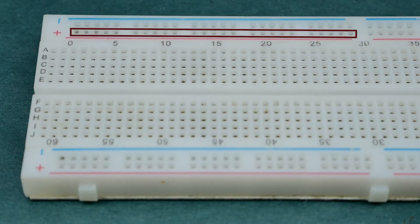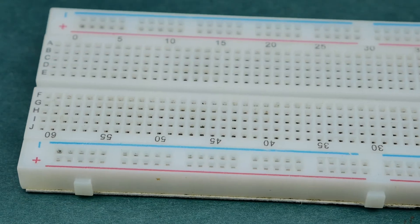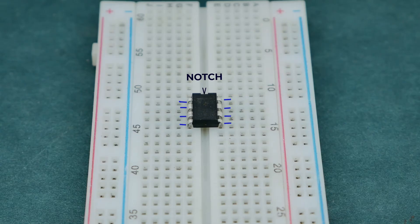We'll be using this row as positive rail and this as negative rail. Place 555 timer IC on the breadboard with its notch facing up and these are the pin numbers with respect to the notch.